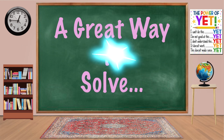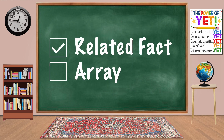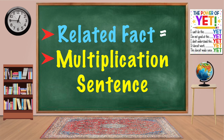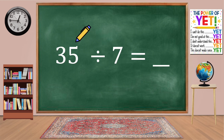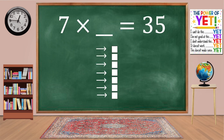A great way to solve a division problem is to use a related fact and an array. A related fact would be a multiplication sentence. 35 divided by seven equals what? We can ask ourselves: seven times what equals 35? We can start with a column of seven rows and skip count to 35.